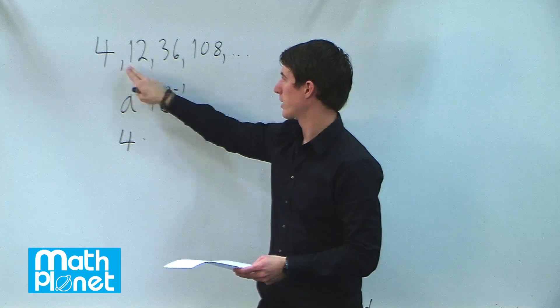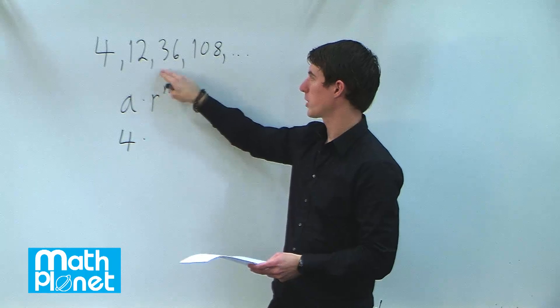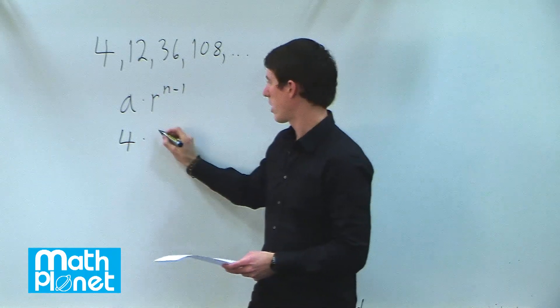So if we multiply 4 by 3, we get 12. If we multiply 12 by 3, we get 36, etc. So r is 3.